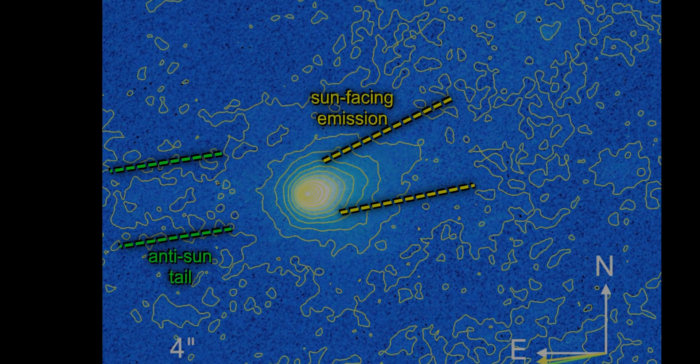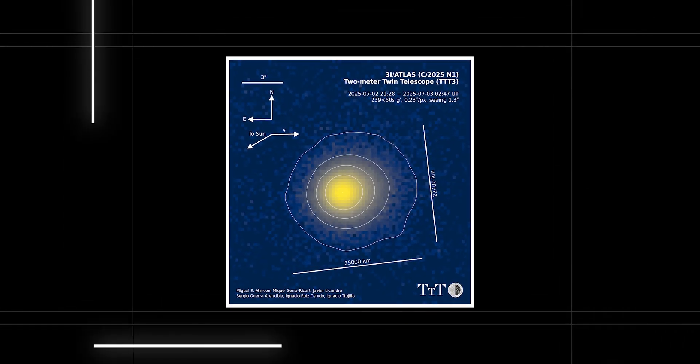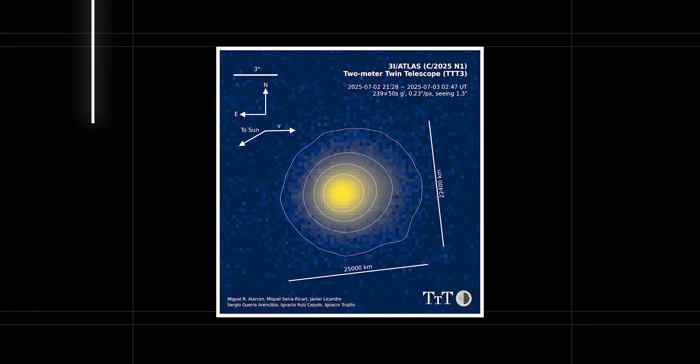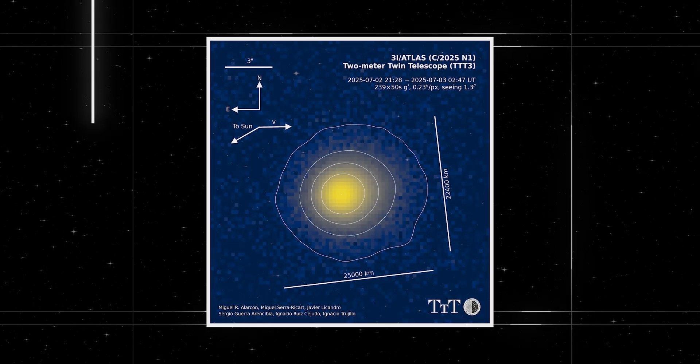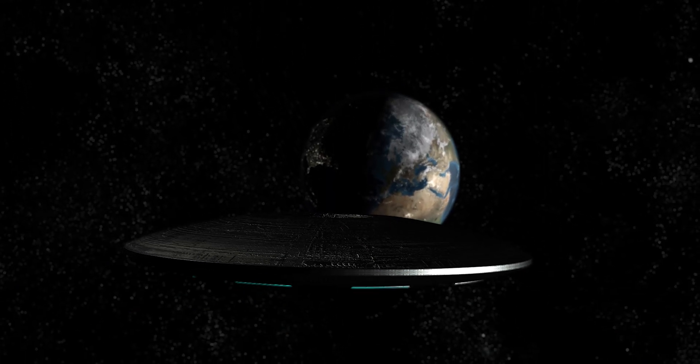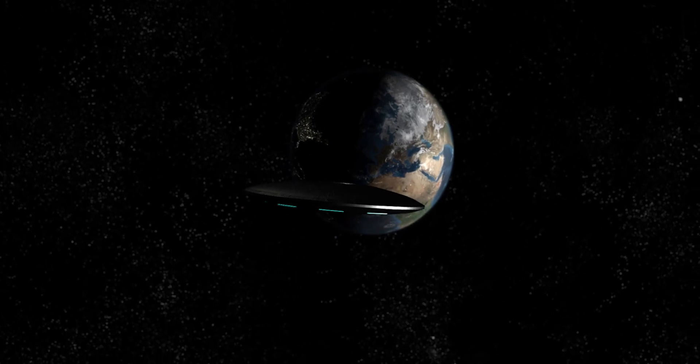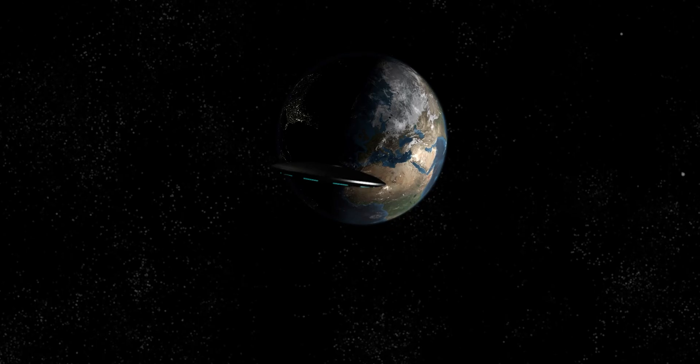Careful modeling revealed that the nucleus of 3I Atlas was small, between 440 meters and 5.6 kilometers across. Far smaller than the earliest estimates, and smaller still than most comets we know. That finding ruled out the wildest ideas. 3I Atlas was not a massive alien probe, nor a planet-sized shard wandering between stars. It was a compact, volatile-rich nucleus, a natural body that had simply traveled farther than most.